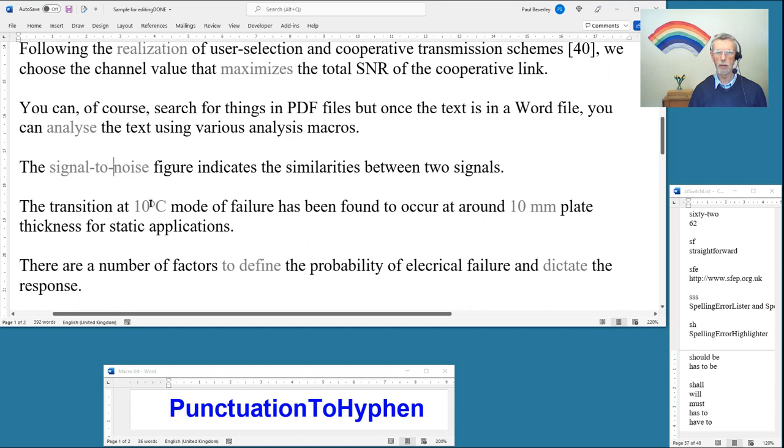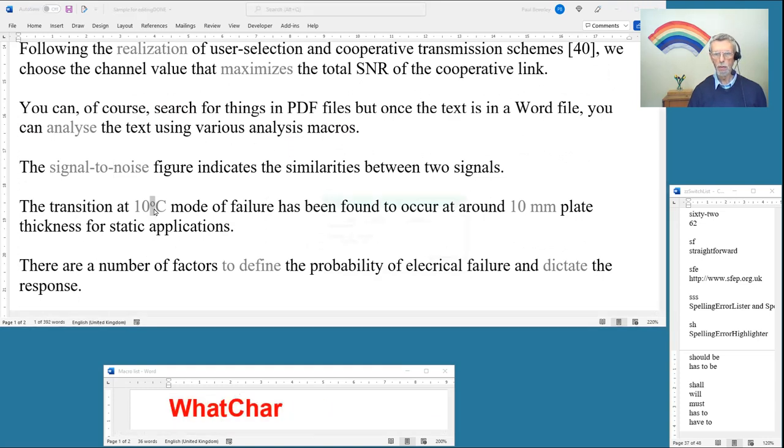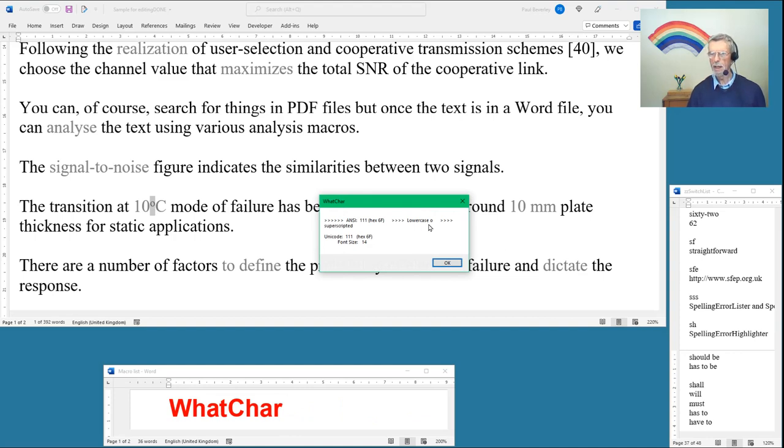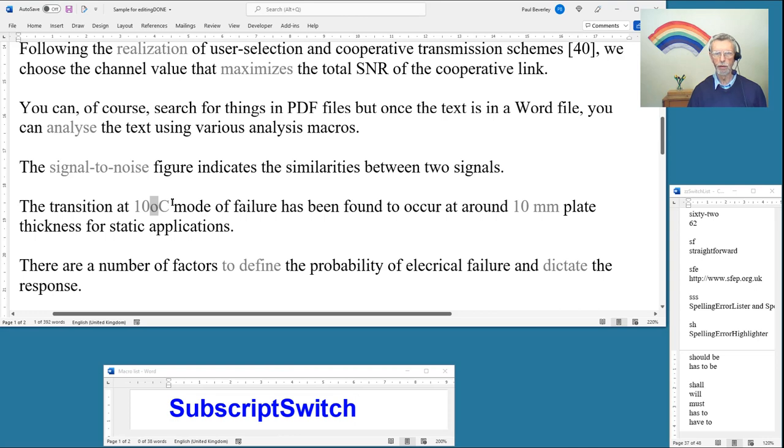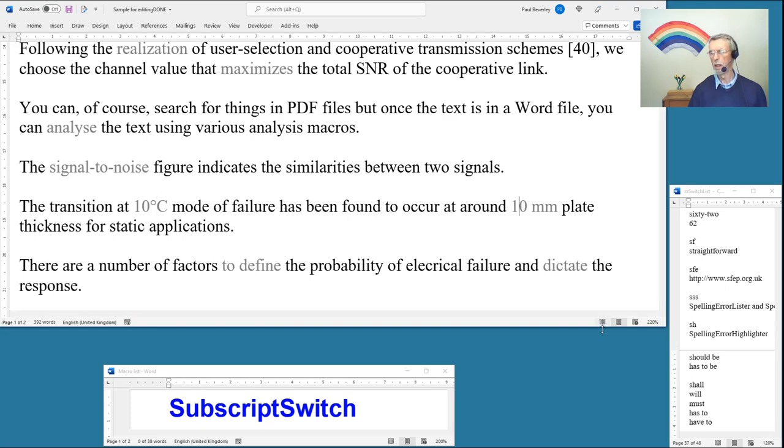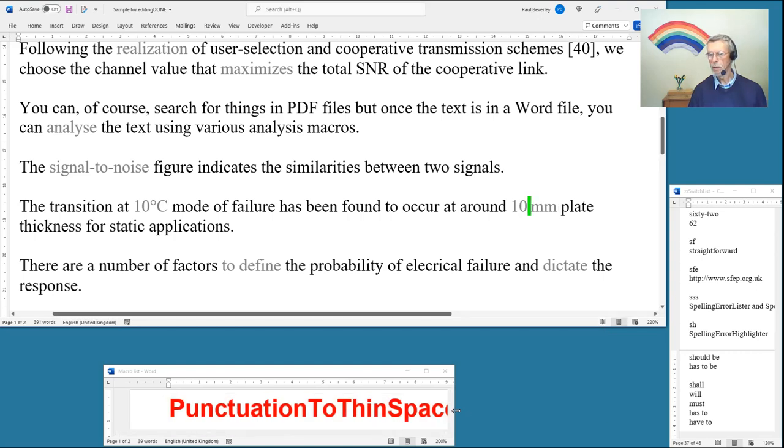The signal-to-noise ratio. Noise figure indicates similarity between two signals. The transition at 10 degrees, now that looks a little funny. I'm not convinced that's a degree symbol. So if I run what char, it tells me yes, it's a lowercase O that is superscripted. Okay, so we don't want superscripted, so we have to switch that off and then let's type a proper degree symbol instead. On the 10 millimeter, we like thin spaces in units there. So we have a thin space in the space plate. And I've got it set so that it actually puts a color on it so that I know which ones are thin spaces.